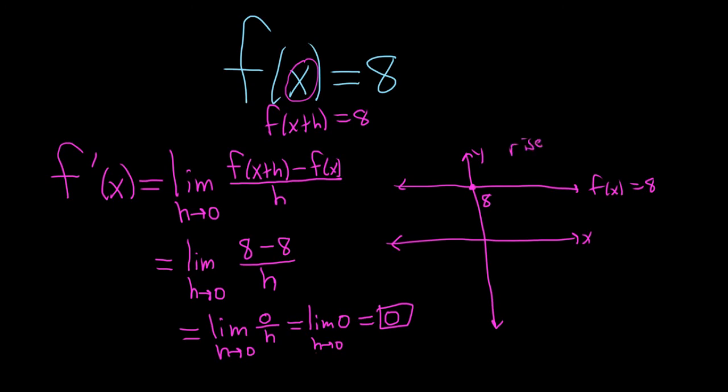It's rise over run for slope, for lines. And the rise is 0. So it's 0 over run. So it's simply 0. So the derivative of 8 is equal to 0. The derivative of any constant is always going to be 0 because the slope is 0.